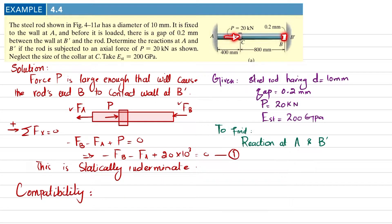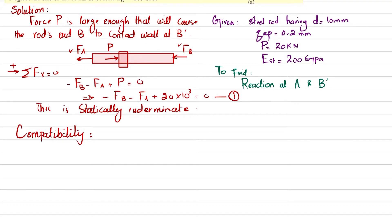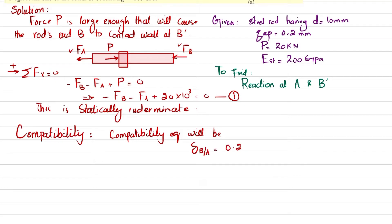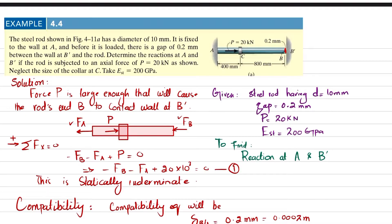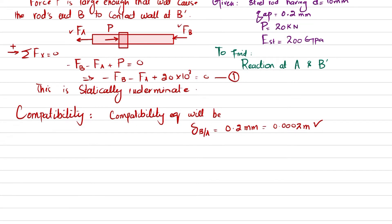Since force P is large enough to fill the gap and the rod contacts B dash, the compatibility equation is: delta_BA equals 0.2 millimeters, which equals 0.0002 meters. The deflection or change in length of point B with respect to point A must equal this gap.